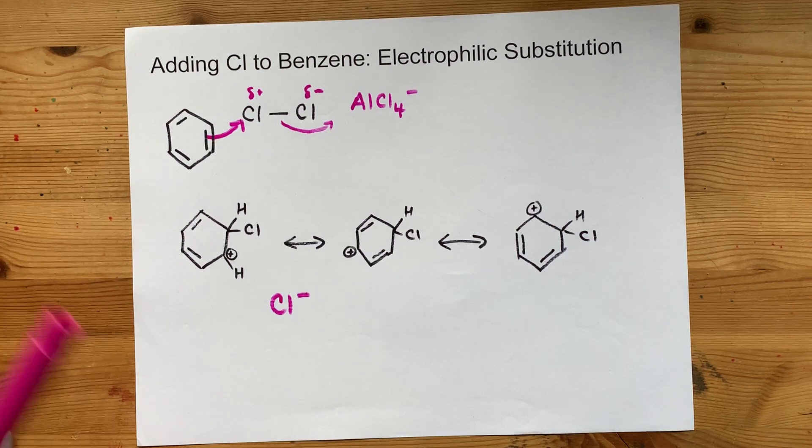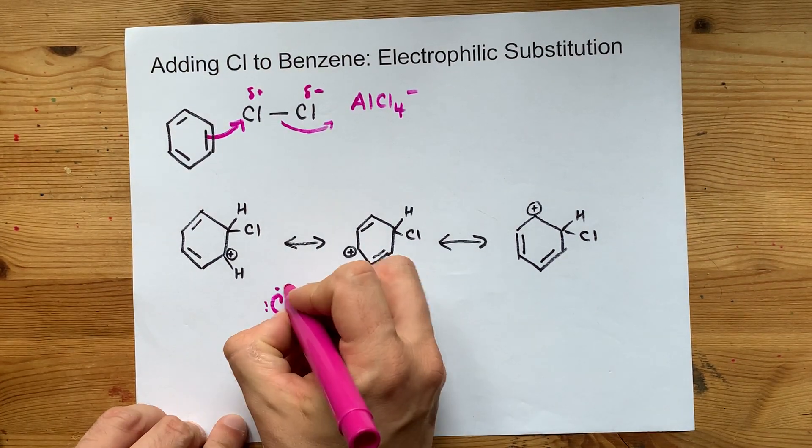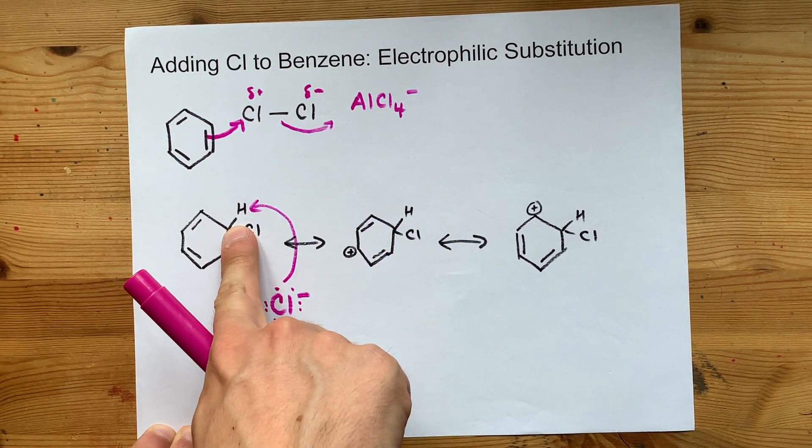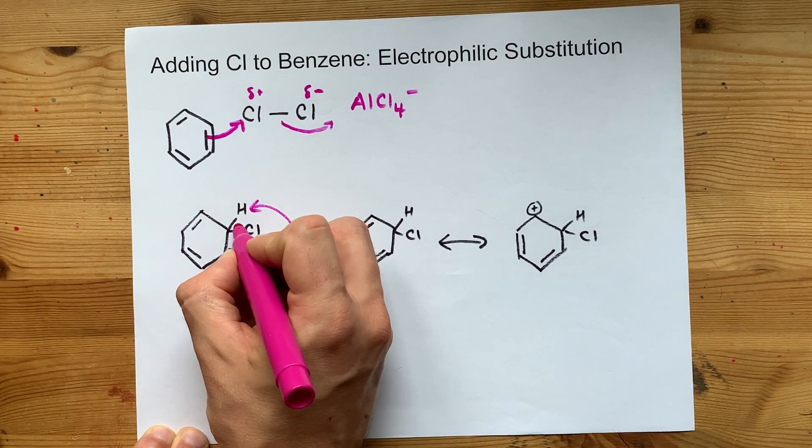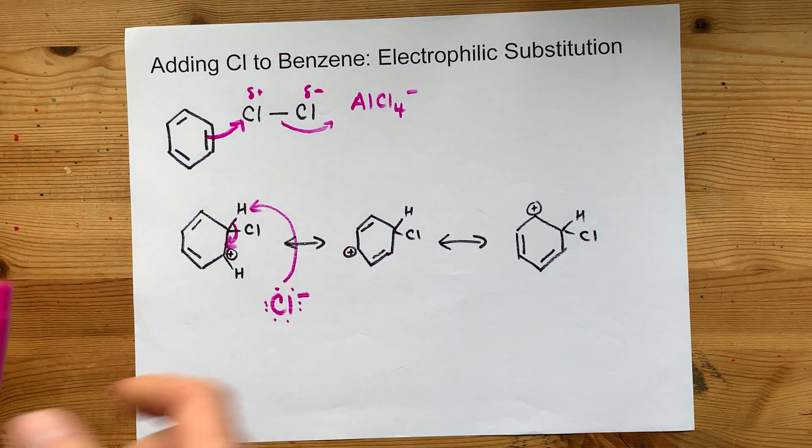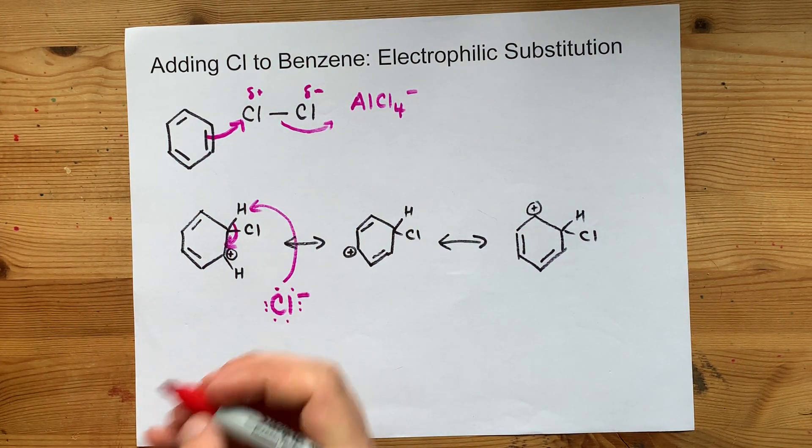If I was to draw that, I guess I'd draw my lone pairs here, show that lone pair attacking the hydrogen, and the bonds holding the hydrogen to the carbon chain flow in here to reform the double bond, the regular alternating double bonds that you're used to seeing for benzene.